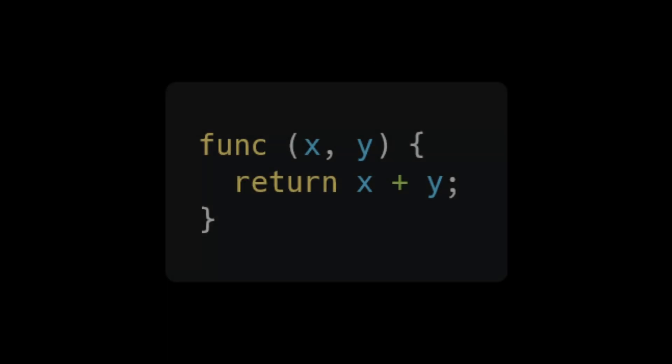In this video, we are going to work through parsing function literals and call expressions. First up are function literals, which look something like this. A function literal is how we define a function. We first use the keyword func, then we define the parameters list of zero or more values, and then a function block that will execute when called.